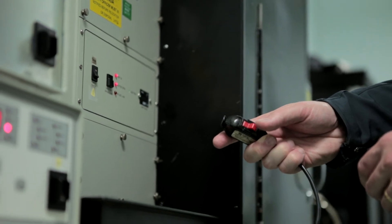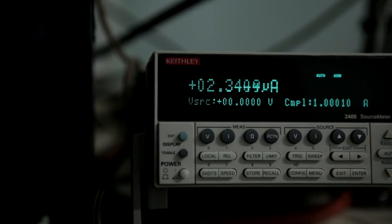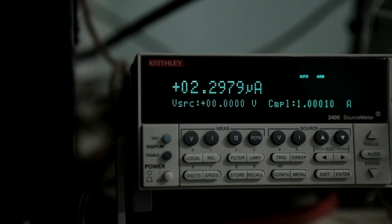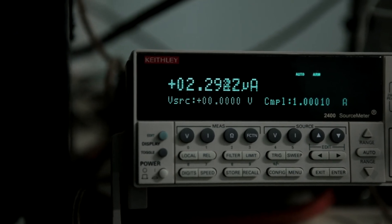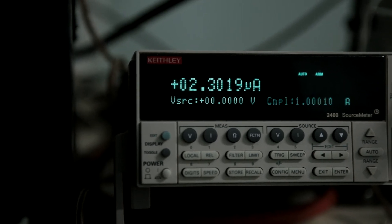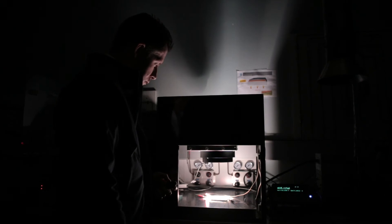So what we're doing here is we're measuring how much current the solar cell is producing. Even under this room light we're still producing a little bit of power but when we turn the solar simulator on that simulates the real sunlight we see a big jump in the amount of current that we're producing.